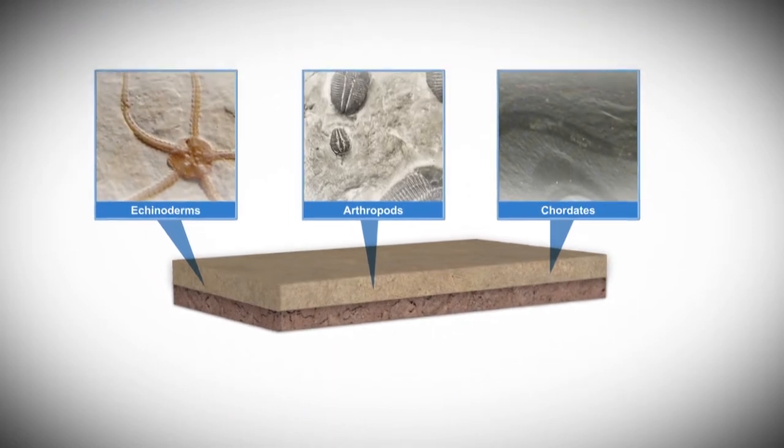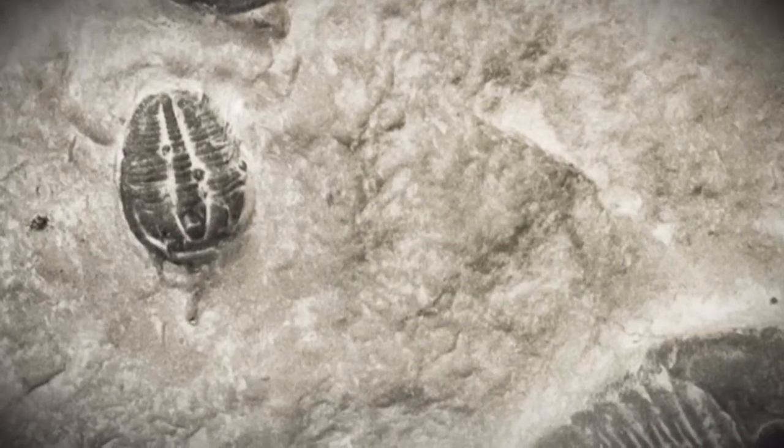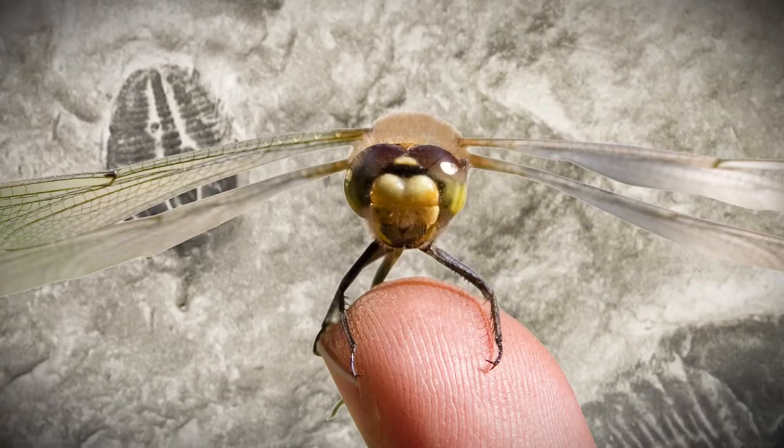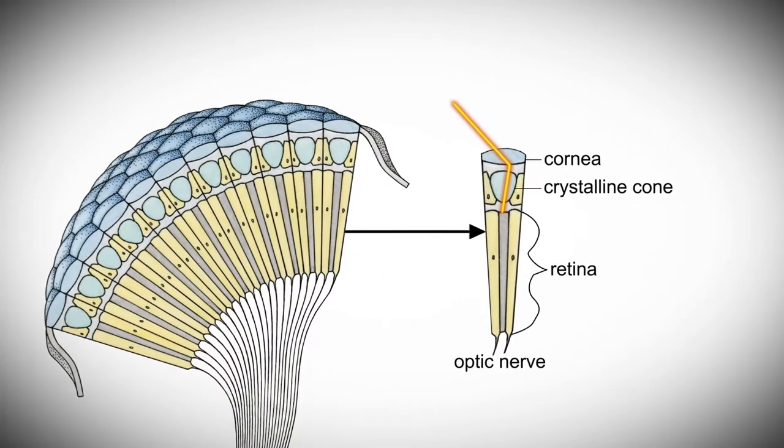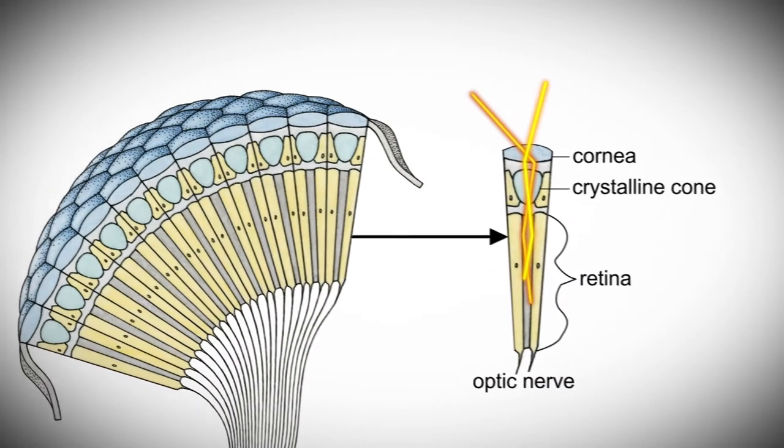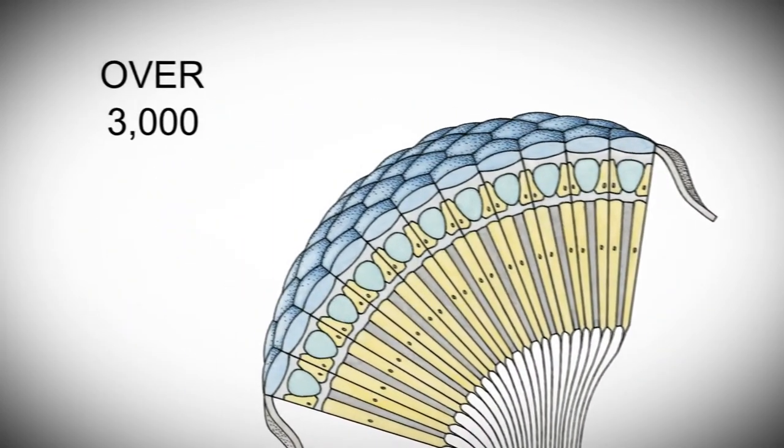And each fossil exhibits amazing complexity. For example, Cambrian arthropods had advanced compound eyes like we see today in dragonflies and bees. The eyes were tuned to the way light travels through water, allowing the creature to see straight. This required each eye to have over 3,000 interconnected lenses. Compare that to only one lens in each human eye.